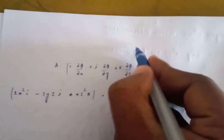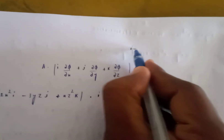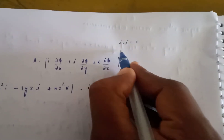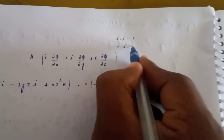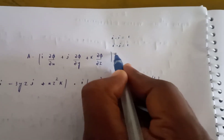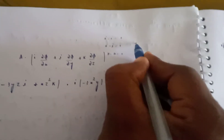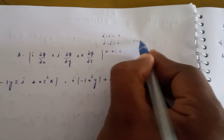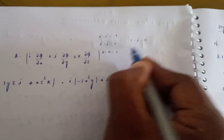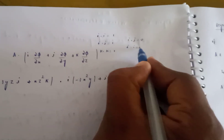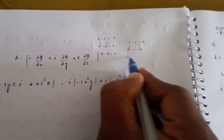Recall dot product identities: i dot i equals 1, j dot j equals 1, k dot k equals 1. And cross terms: i dot j equals 0, j dot i equals 0, i dot k equals 0. Only same-unit dot products survive.